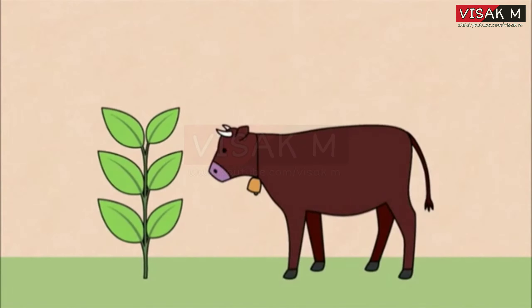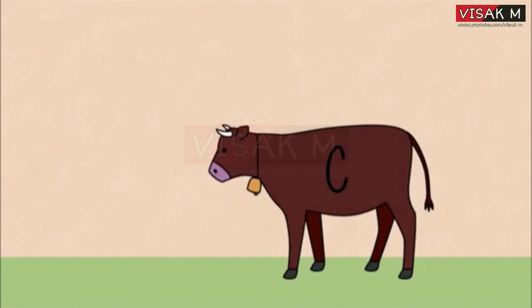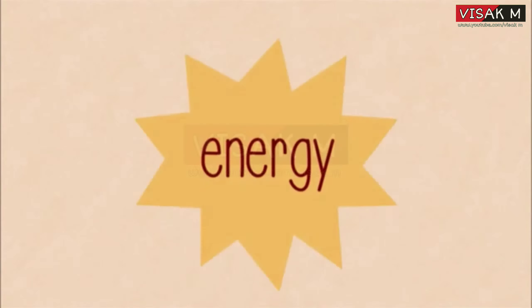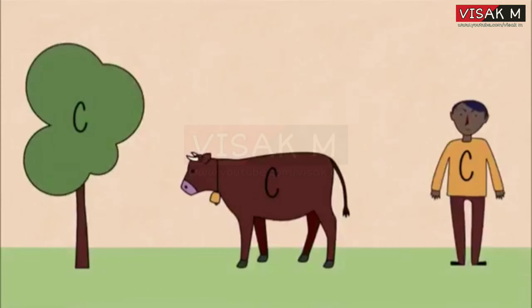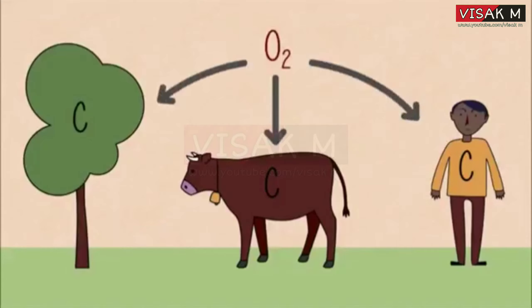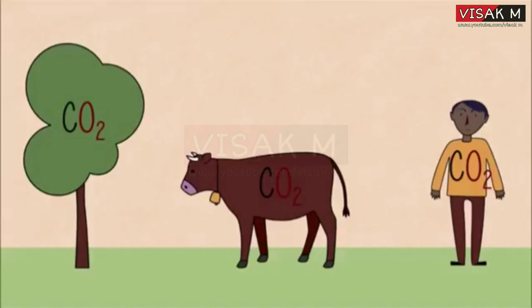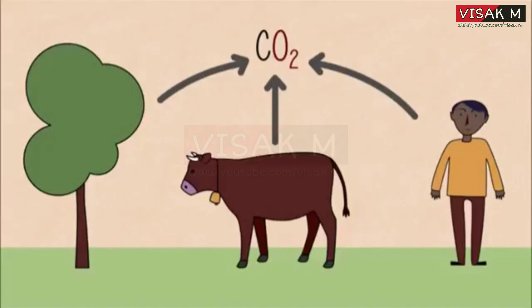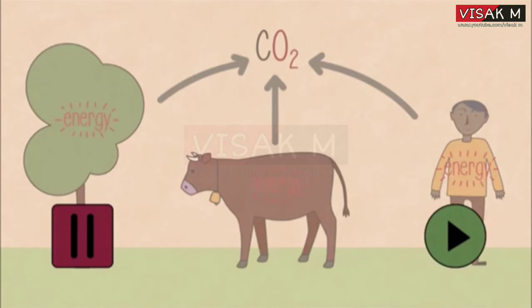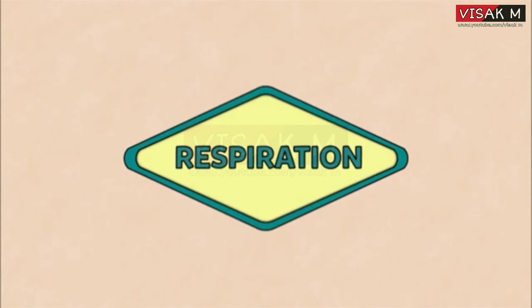Animals, in their turn, get carbon by eating plants or other animals. All this, of course, requires energy. In order to fuel these living processes, plants and animals take back oxygen from the air and re-join it with the carbon, releasing carbon dioxide back into the environment. Do you know the name of this energy-releasing process? Pause the video whilst you think of your answer. It's called respiration.